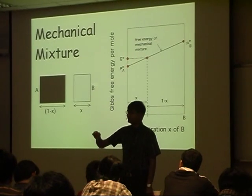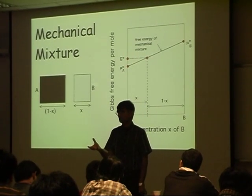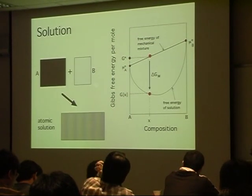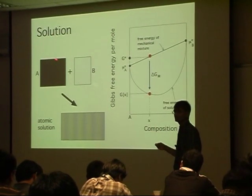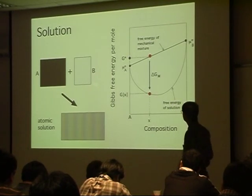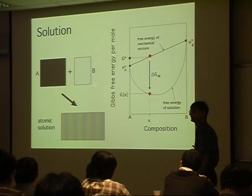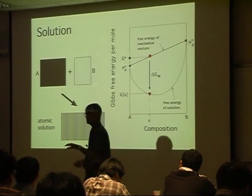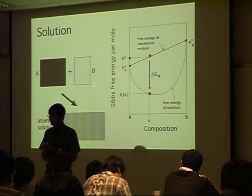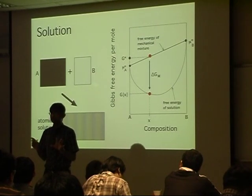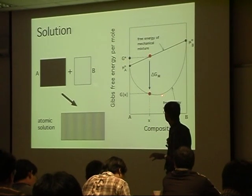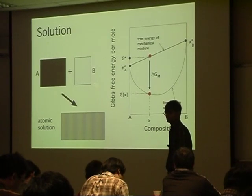A solution, on the other hand, is where we have a very intimate mixture of A and B atoms — mixed on an atomic scale. Even if there is no change in bond energy when I break an A-A bond and a B-B bond to form an A-B bond, I will still get a reduction in free energy. So the free energy of the solution will be lower than the free energy of the mechanical mixture, even with no change in bond energy.